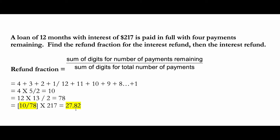This is being refunded because instead of paying the loan over a duration of 12 months, you have paid this loan in eight months. Hence, you're getting a refund back of $27.82. This is how you apply the formula to find the refund fraction and the interest refund amount.